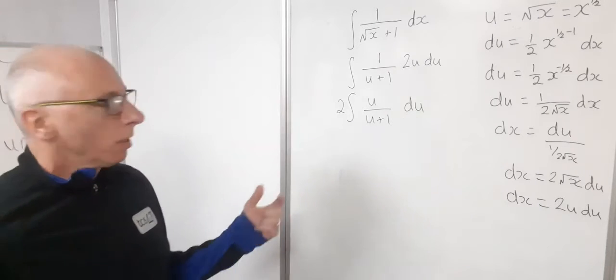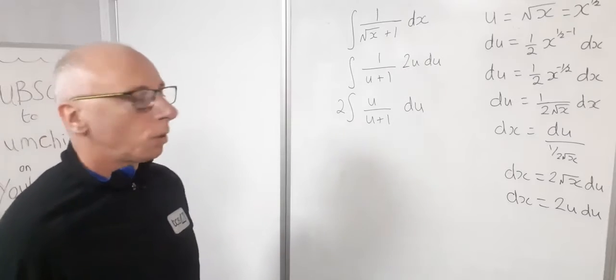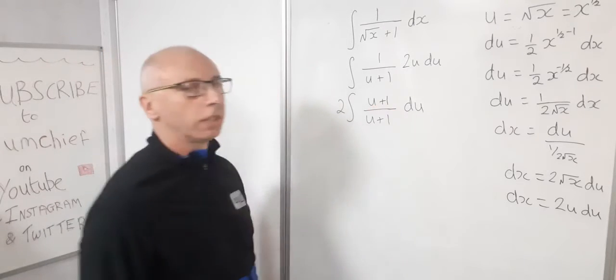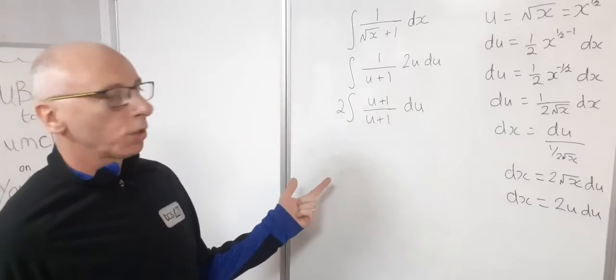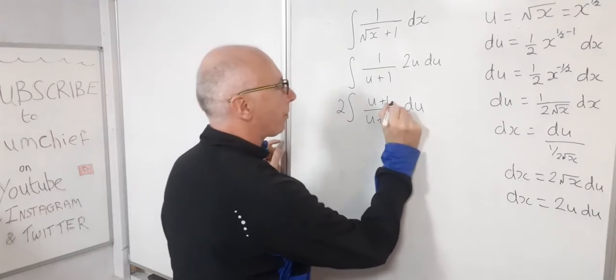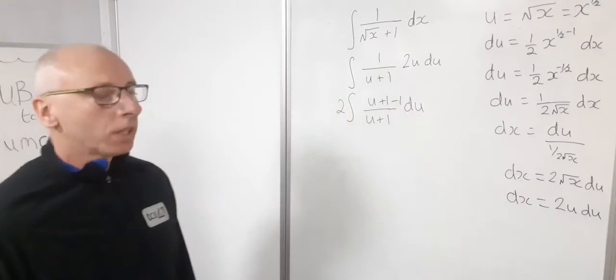And then we've got u on the top divided by u plus one and du. Now there's many ways we can go about this part. The way I like to do is to add one. So obviously you're all shouting in the comments now I've changed the value. But now I can subtract one.